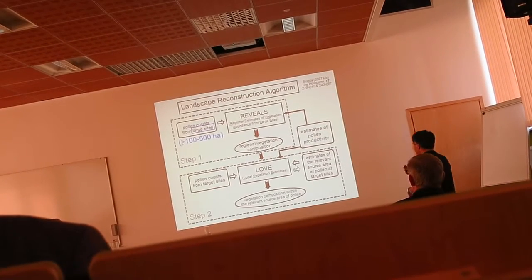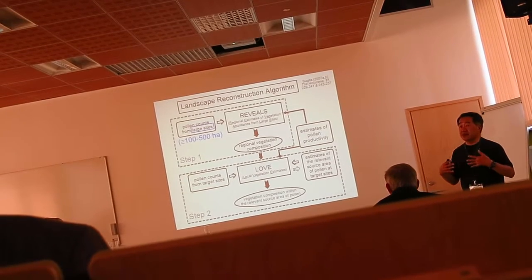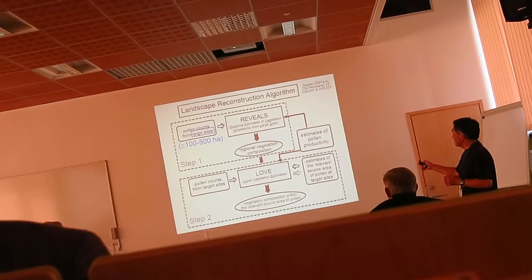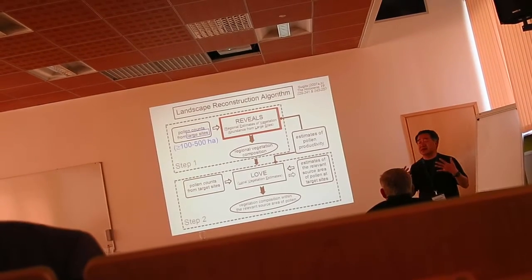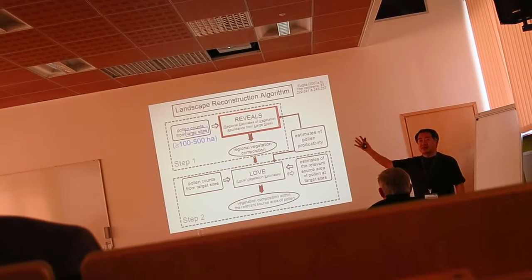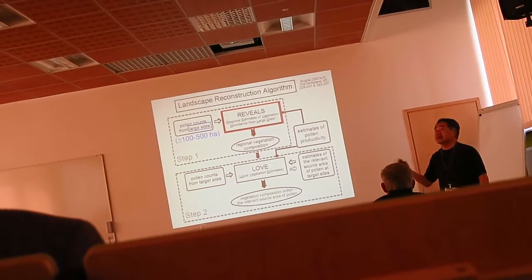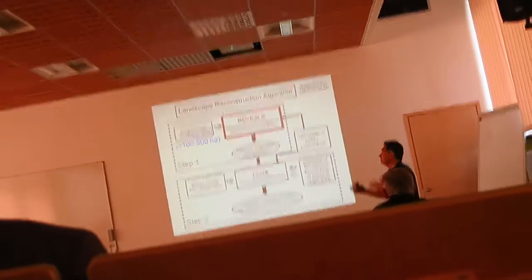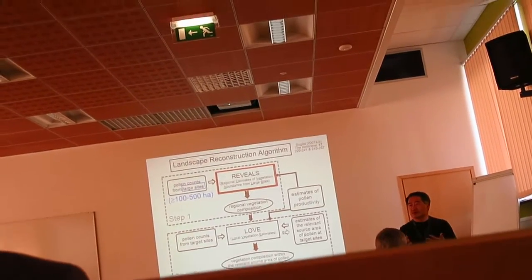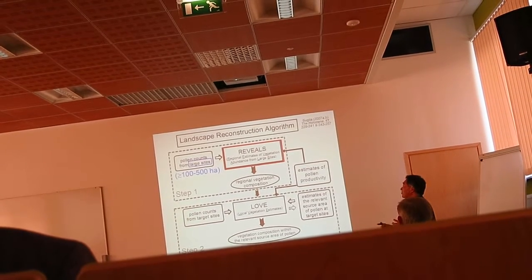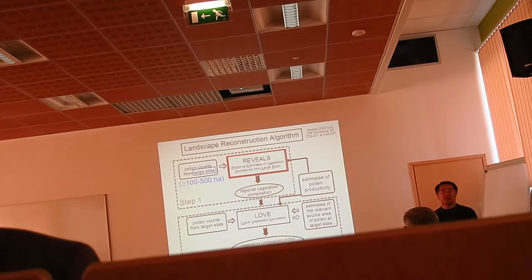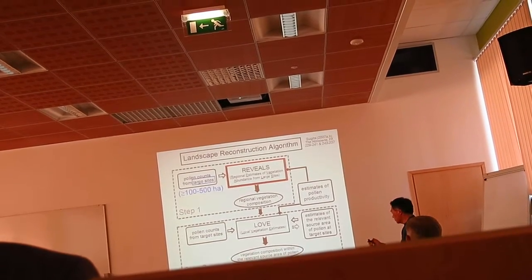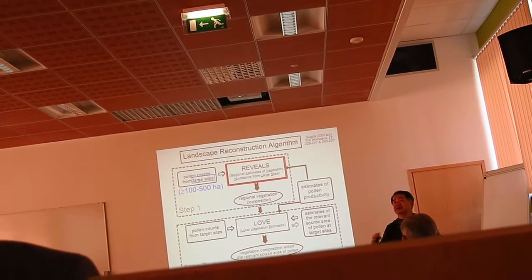I have developed a scheme for reconstructing past vegetation using fossil pollen data, called the Landscape Reconstruction Algorithm. Because pollen grains are transported by wind over long distances, we first have to think about what the regional vegetation would be — for example, within a 50 km radius from your site — and how much of this regional vegetation contributes to your pollen proportions or pollen assemblages. I developed a model called REVEALS to consider regional vegetation composition first, and the next step is to estimate vegetation composition at a much smaller landscape or local scale.